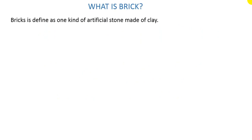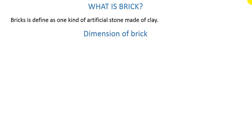First of all we will see what a brick actually is. A brick is defined as one kind of artificial stone made of clay. The main material of bricks is clay.